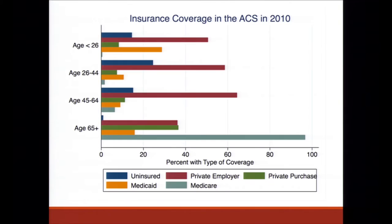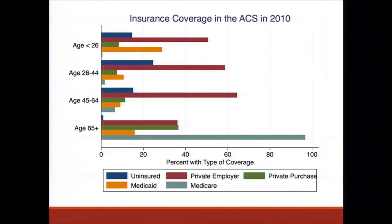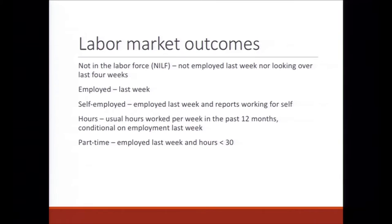The ACS measures health insurance from different sources — all self-reported, and respondents can indicate more than one source. We focus on the 45 to 64-year-old group, which had reasonably high levels of uninsurance prior to the ACA. We don't focus on age 65 and over since that population is primarily covered by Medicare. Labor market outcomes examined include: not in the labor force, employed last week, self-employment, number of hours, and whether part-time.